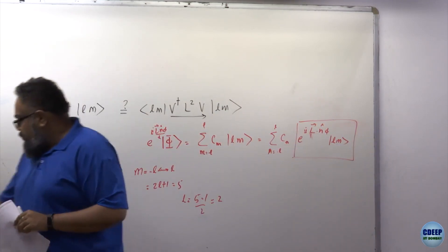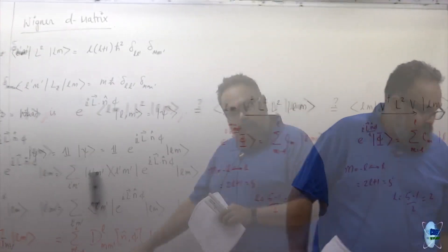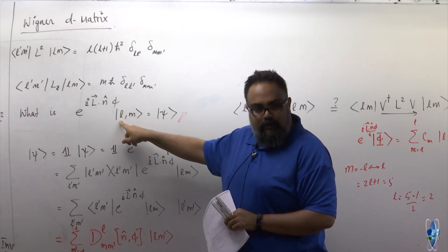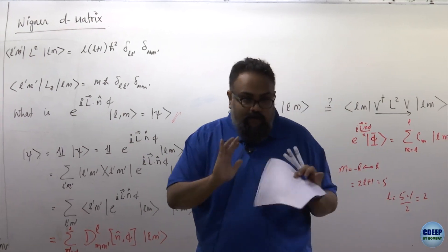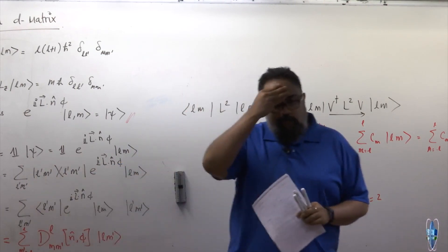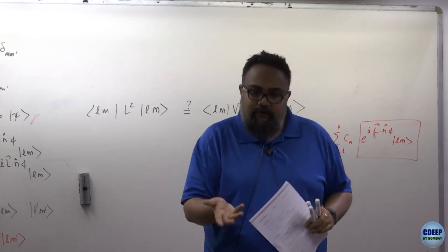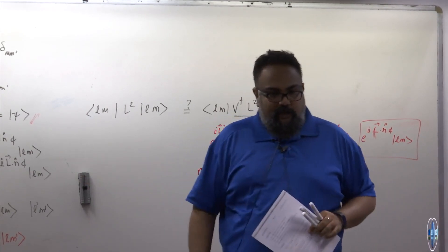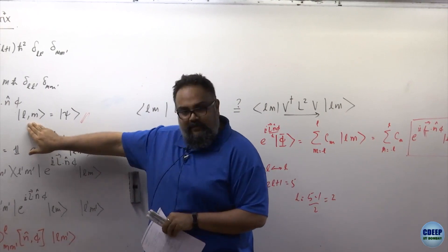D is a number once I tell you M, M', L for a given rotation. You can interpret the entire object as an operator in the M, M' space. Because I'm taking a given L, only that L survives by orthogonality. A rotation matrix in the angular momentum space can only change the M quantum number, not L, because L² commutes with rotations. So even summing over the full basis, only the M summation matters.